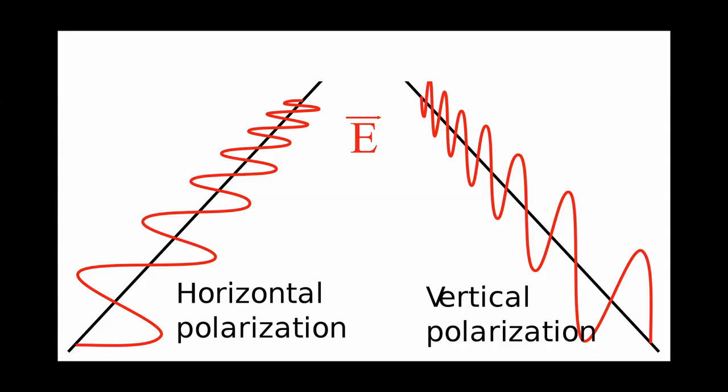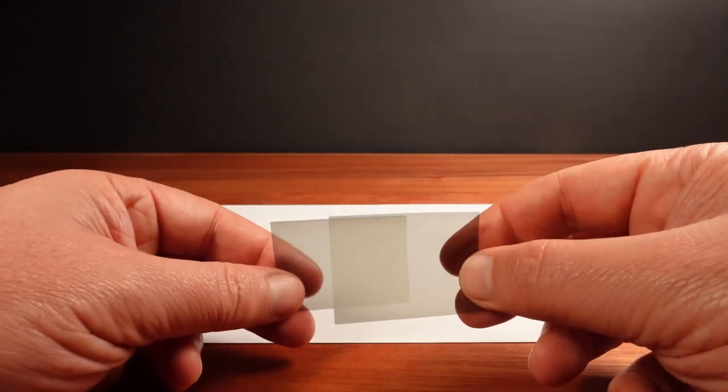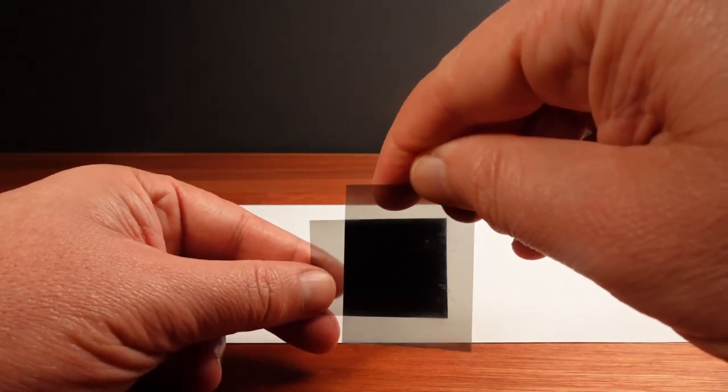Liquid crystal displays work by polarising light into either horizontal or vertical waves, then passing that polarised light through another polarising filter. If the filters cross each other, then the pixel goes dark.